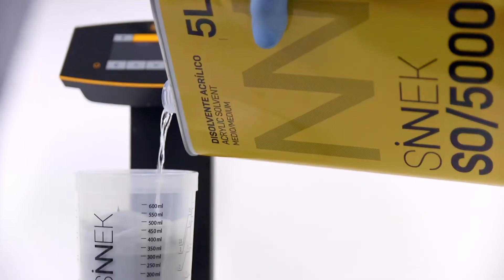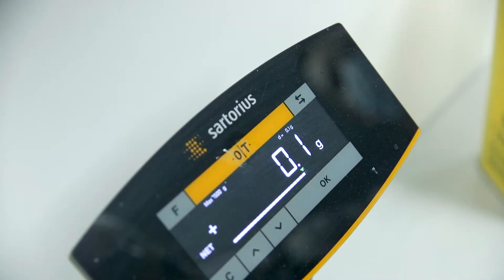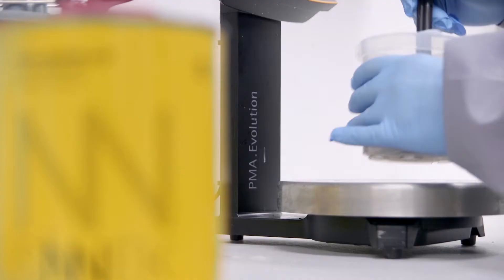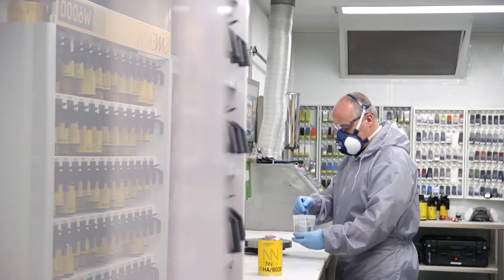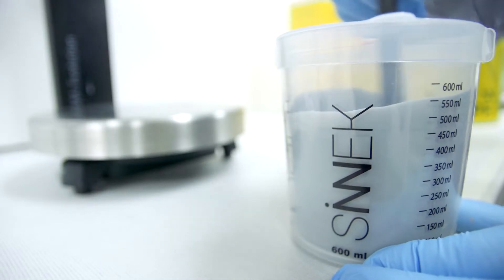For an exact mixture, simply follow the indications of the colour schedule, making sure that the correct amount of each component is added. This can be checked on the precision scales display. Finally, stir the product regularly to obtain a uniform mixture.